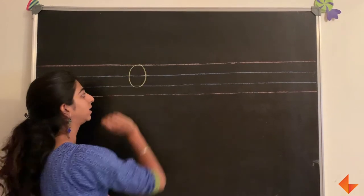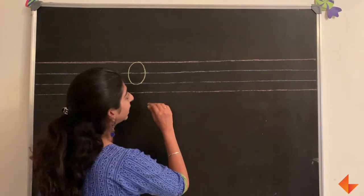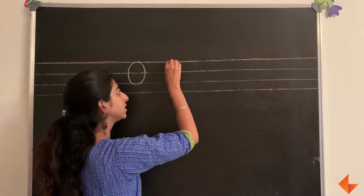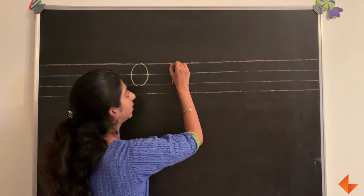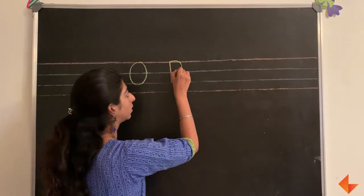To write the letter P, draw a standing line and draw a small curved line.